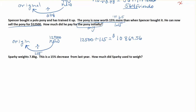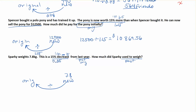Sparky weighs 7.8 kg. This is a 15% decrease from last year, so last year is past tense — the original. How much did Sparky used to weigh? We have the new value of 7.8 and divide. 100% minus 15% gives 85%, which as a decimal is 0.85. So 7.8 divided by 0.85 gives 9.18 kg. That's how much Sparky used to weigh. Remember: working from new to original, figure out the total percentage and divide. Decreasing gives a 0.something; increasing gives a 1.something.